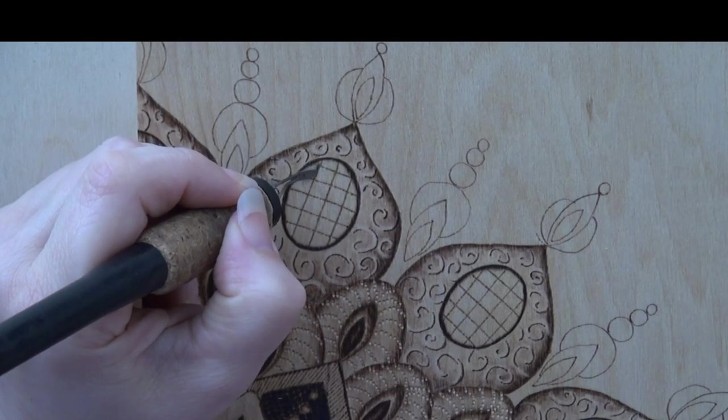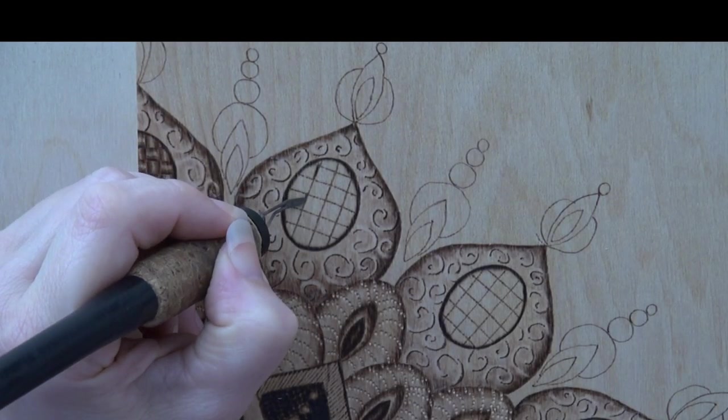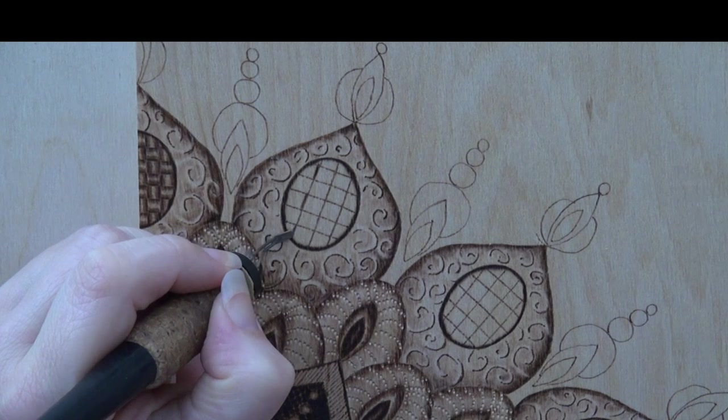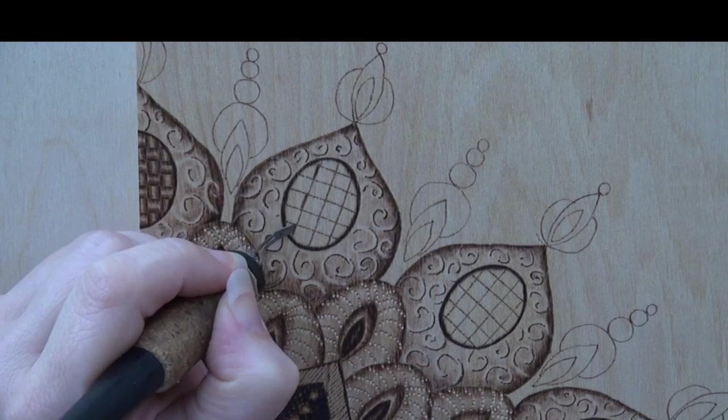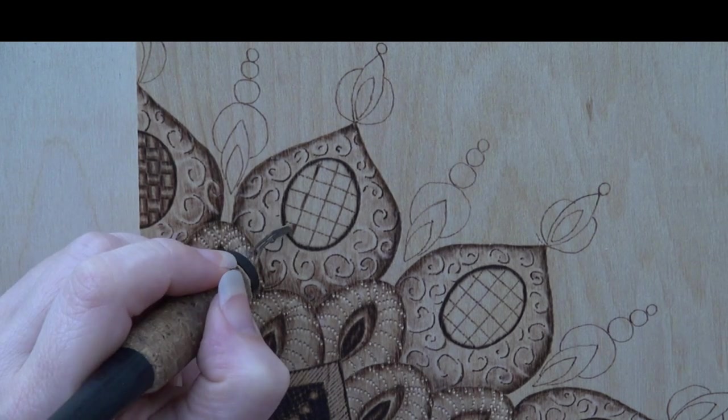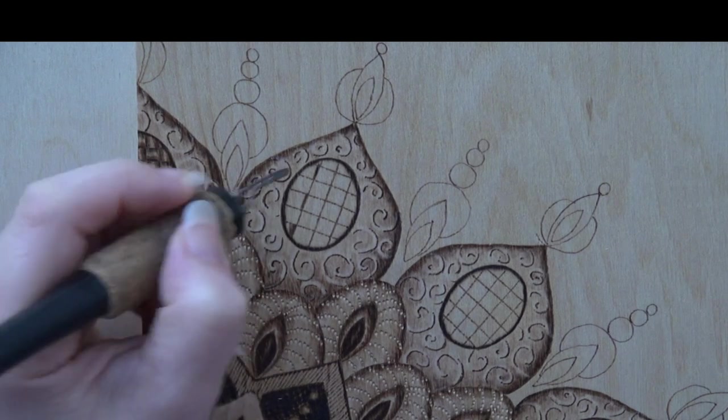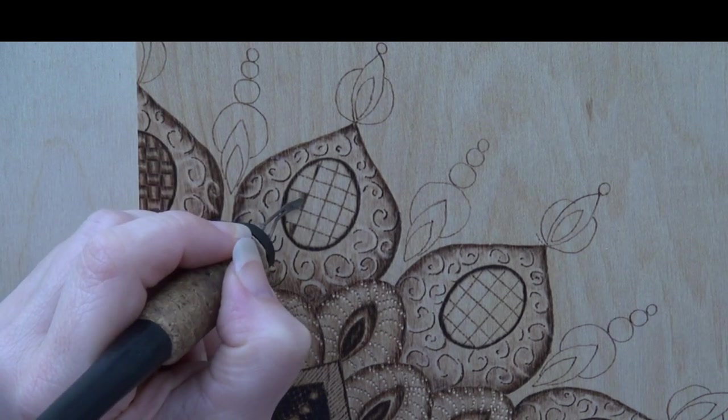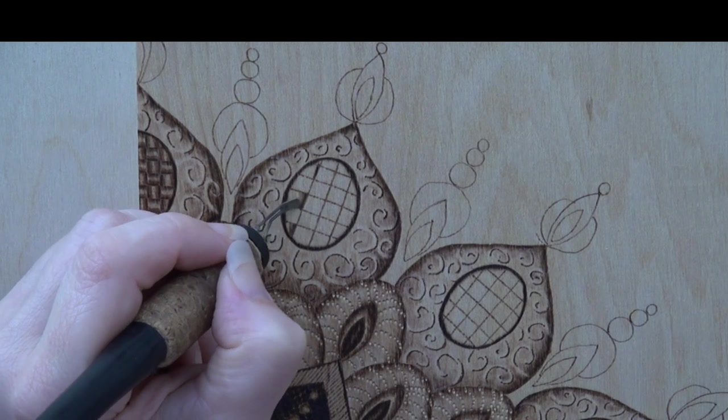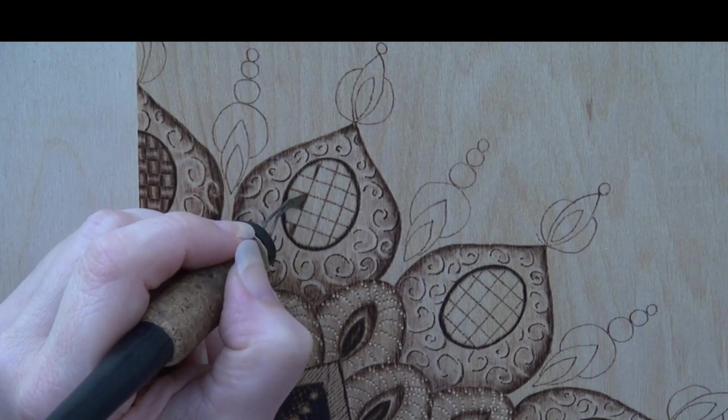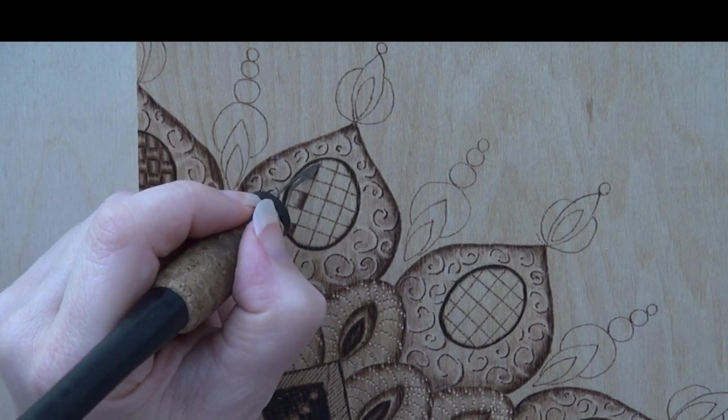We will be turning the grid into a basket weave pattern. Start by using a shader pen tip to burn along the right side of every other square in the first column of the grid. Then burn short pull-away strokes along the right side of every other square in that grid.